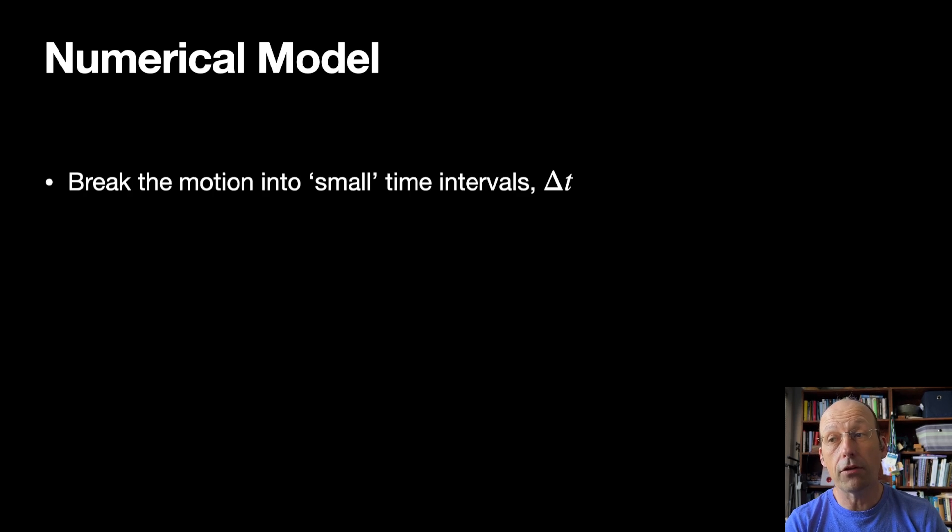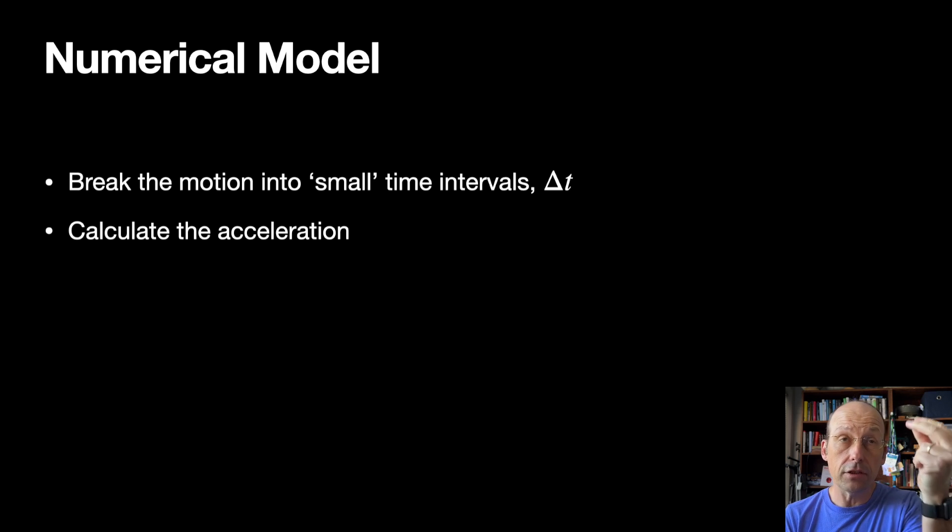But the numerical model, the basic idea, is to break the motion into small intervals of time, delta t. And this is small, right? Because if you're talking about a planet orbiting the sun, a small interval may be a day, right? That's a small time because it doesn't really move that far in a day. But we can change that up, and you can see what we're going to do with that. Now, during this delta t, I can calculate the acceleration, right? If I know the position, then I can calculate the vector acceleration. I just showed that equation.